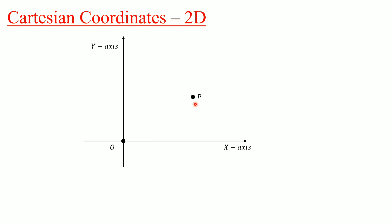We will form a rectangle such that one vertex is our point P and the diagonally opposite vertex of that rectangle is point O.